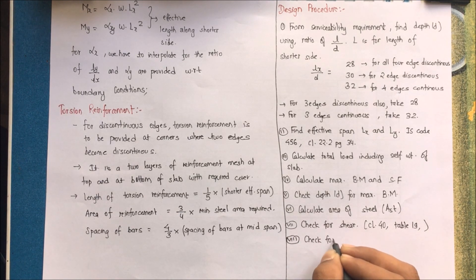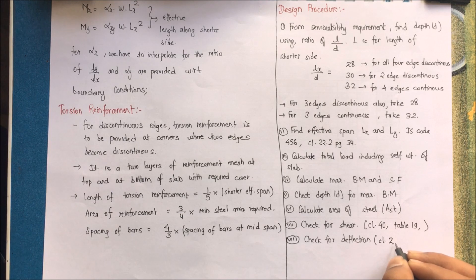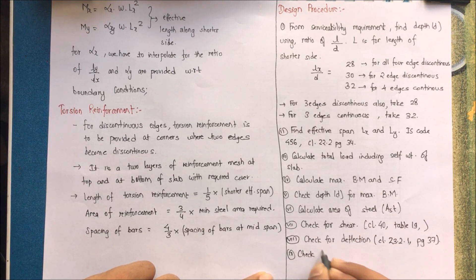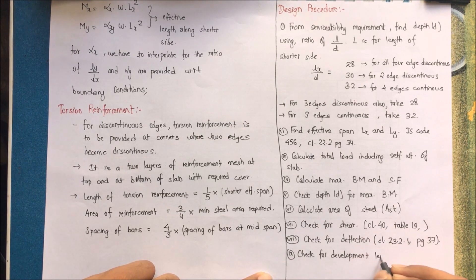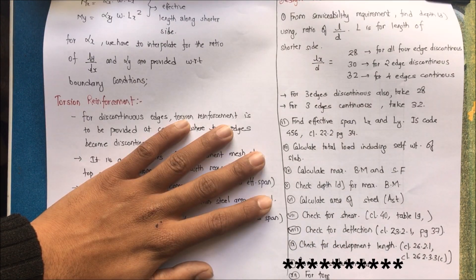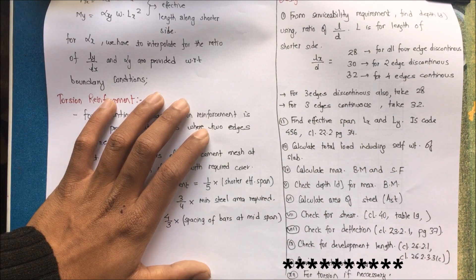Step 6: calculate the area of steel Ast. Step 7: check for shear — whether the slab is safe in shear — from clause 40, Table 19. Step 8: check for deflection criteria from clause 23.2.1, page 37. Step 9: check for development length, which is required to transfer stress from steel to concrete, from clause 26.2.1 and clause 3.3c. Step 10: check for torsion if necessary — if corners are to be held down, torsion reinforcement has to be provided.